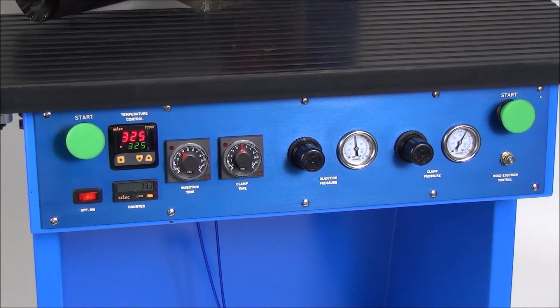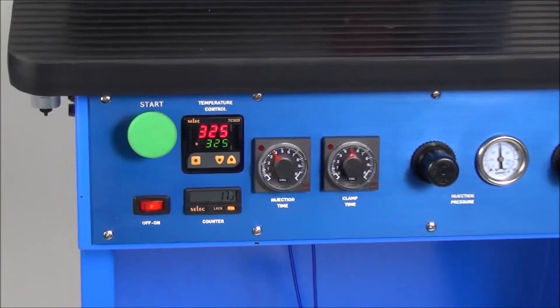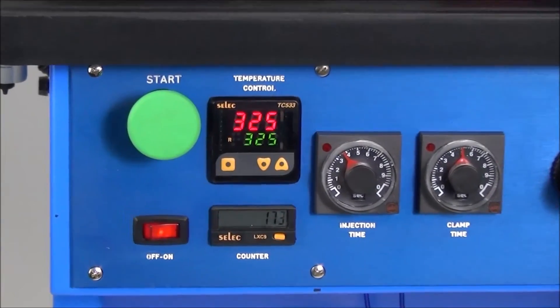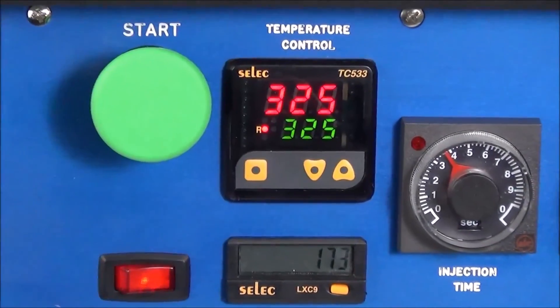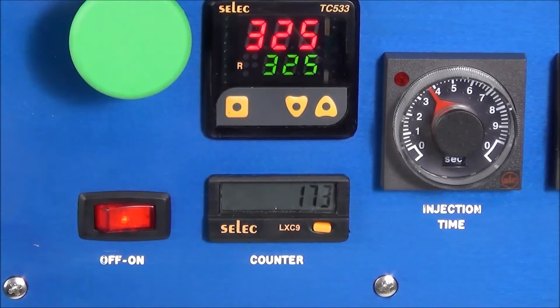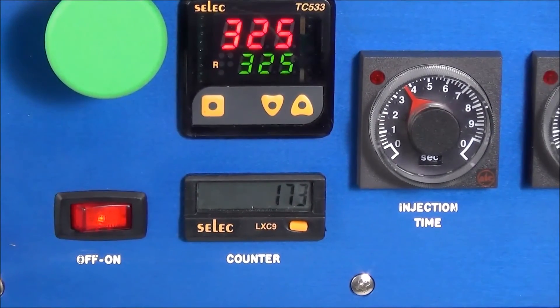Now let's take a look at the control panel. The on-off switch is located at the bottom left-hand side of the control panel. To the right of the on-off switch, the unit also features a built-in resettable production counter.